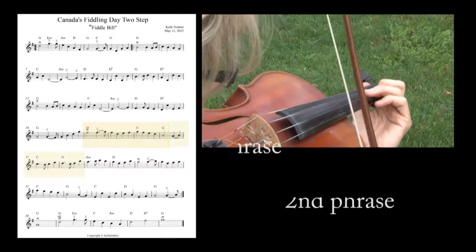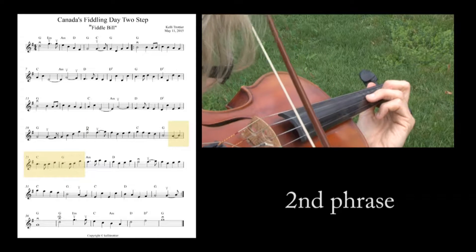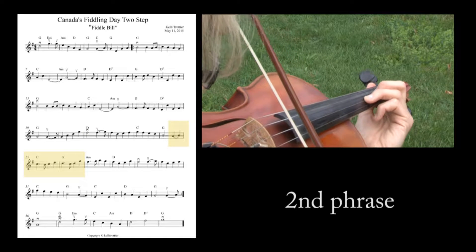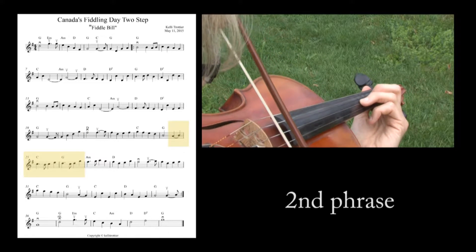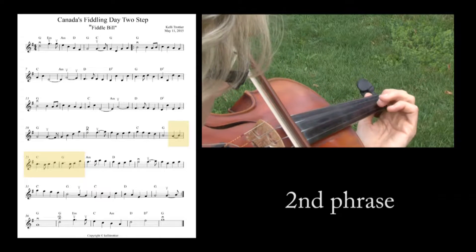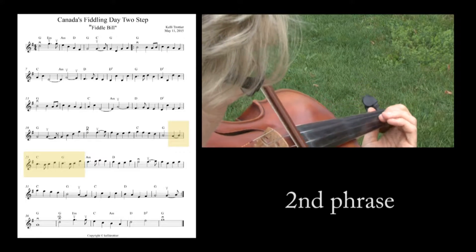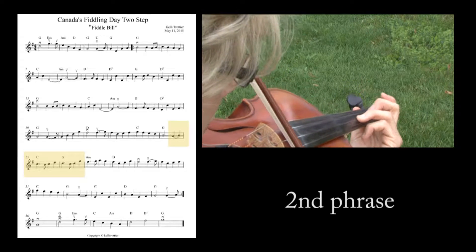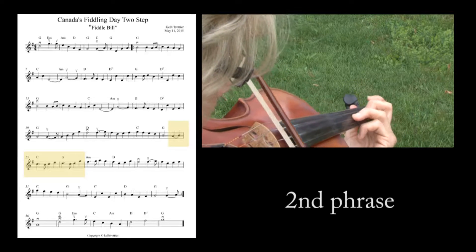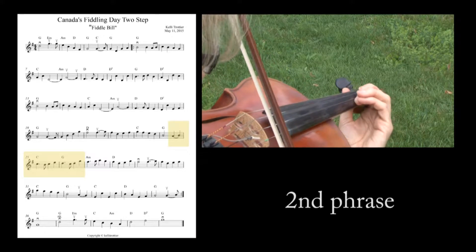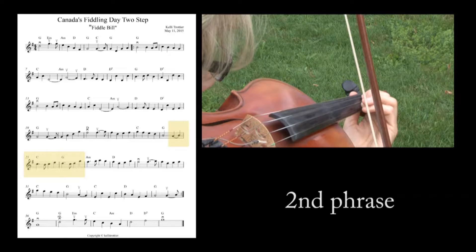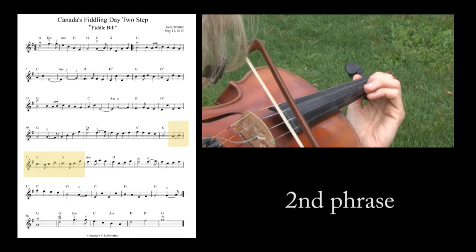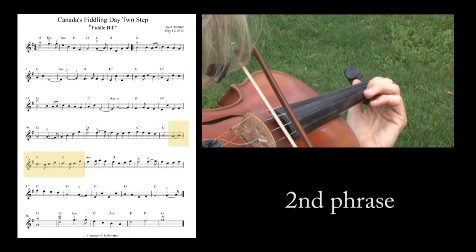The next phrase starts with an up bow on the A string — you're going to slur to B. Up bow slur, A to B.